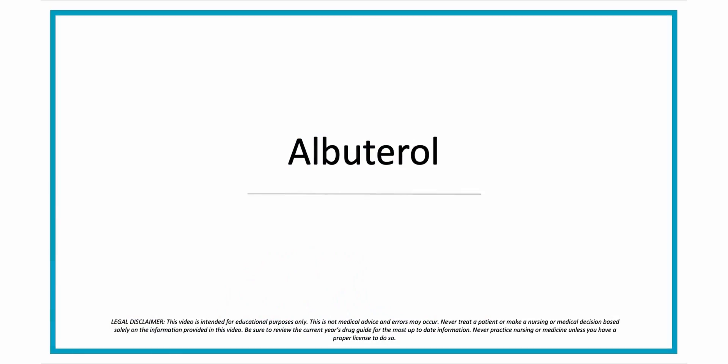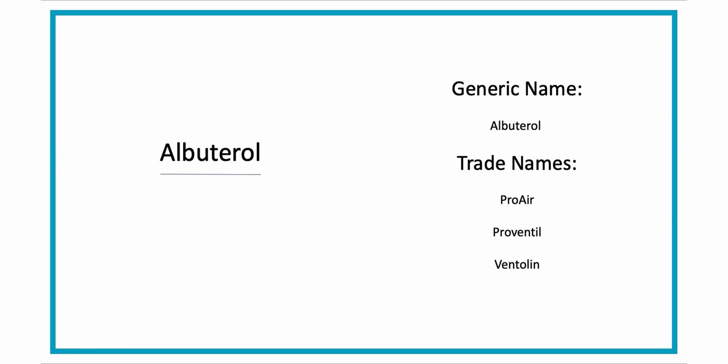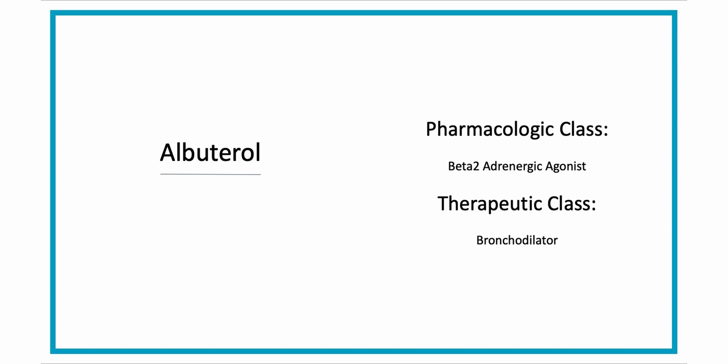Today we're going to talk about albuterol. The generic name is albuterol and the trade names are Proair, Proventil, and Ventolin. Albuterol's pharmacologic class is a beta-2 adrenergic agonist and the therapeutic class is a bronchodilator.